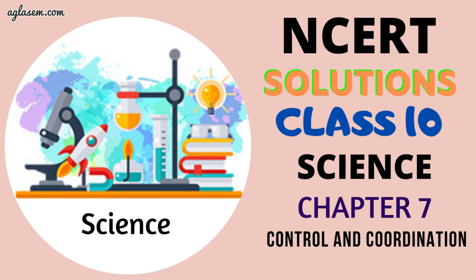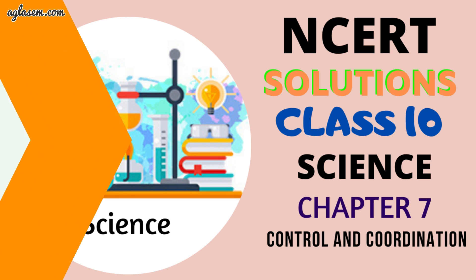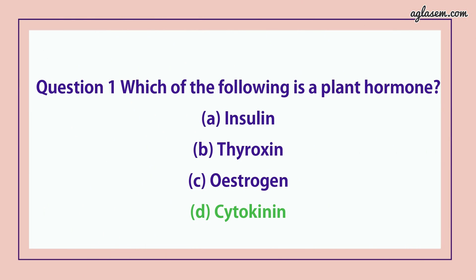So, let's discuss question and answers. Question number 1 says, which of the following is the plant hormone? Answer is D, i.e. cytokinin.